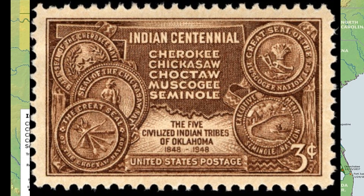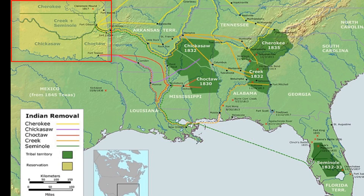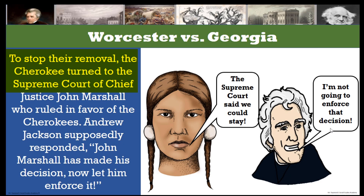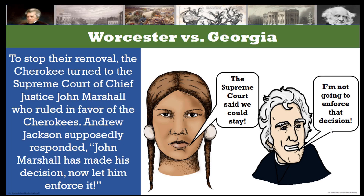Congress established what they called the Indian Territory in what is most of present-day Oklahoma. Many tribes were pressured to sign treaties and move west, but one tribe — the Cherokee — refused. To stop their removal, the Cherokee turned to the Supreme Court under Chief Justice John Marshall, who ruled in favor of the Cherokees, saying it was unfair for Georgia to kick them out. Andrew Jackson supposedly responded, 'John Marshall has made his decision, now let him enforce it.'